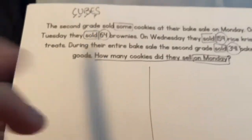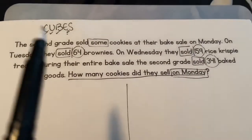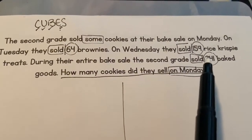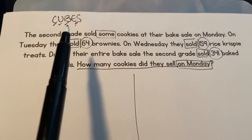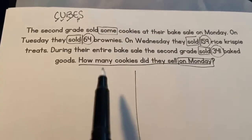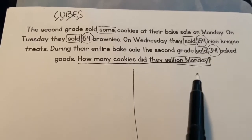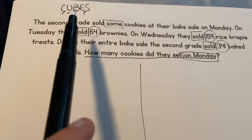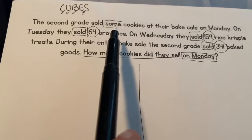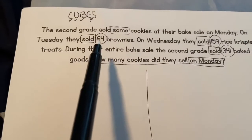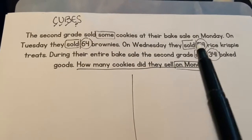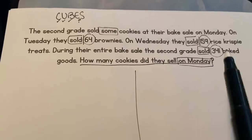So I went ahead and I did my cubes. So I circled my numbers. So I have three numbers here: 64, 159, and 341. I underlined my question, which is how many cookies did they sell on Monday? And I boxed in my important words. Some, I know that that's some I don't know what it is. They sold 64, they sold 159, and they sold 341.